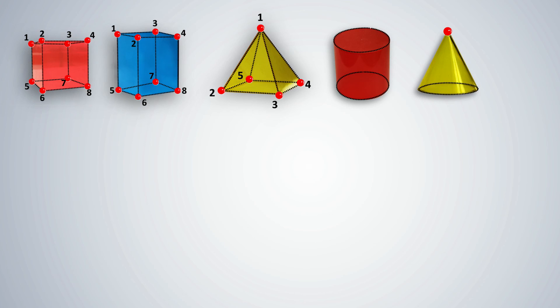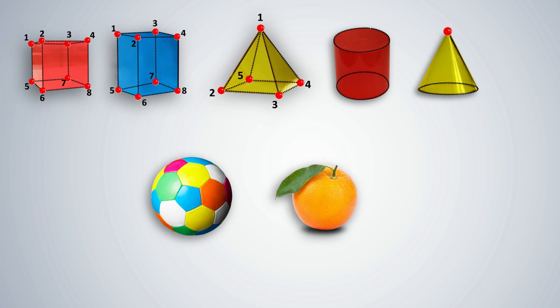Can students name a shape which has 0 flat surfaces, 0 edges and 0 vertices? Tell them that this interesting shape is called a sphere.